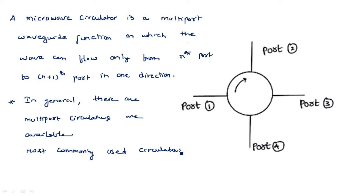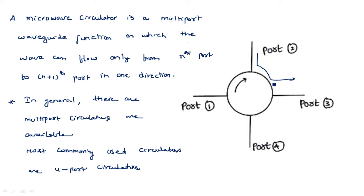Four-port circulators are commonly used devices. Now let us see the operation — how it is working. When input is applied at the first port, the power will be transferred to the second port in the clockwise direction. Assuming the circulator works in clockwise direction, the power will be delivered to port 2, whereas port 3 and port 4 will not get any power. Similarly, when input is applied at the second port, the power will be transferred to the third port.